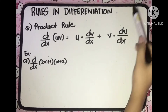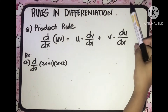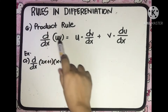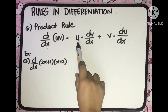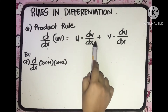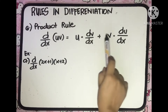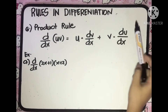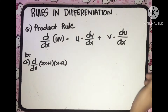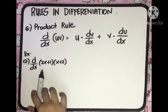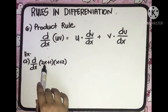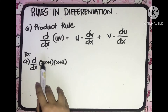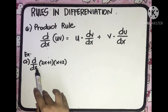The sixth rule is the Product Rule. The derivative of uv with respect to x is equal to u multiplied by the derivative of v with respect to x, plus v multiplied by the derivative of u with respect to x. For example, we have the derivative of (2x plus 1) multiplied by (x plus 2) with respect to x.